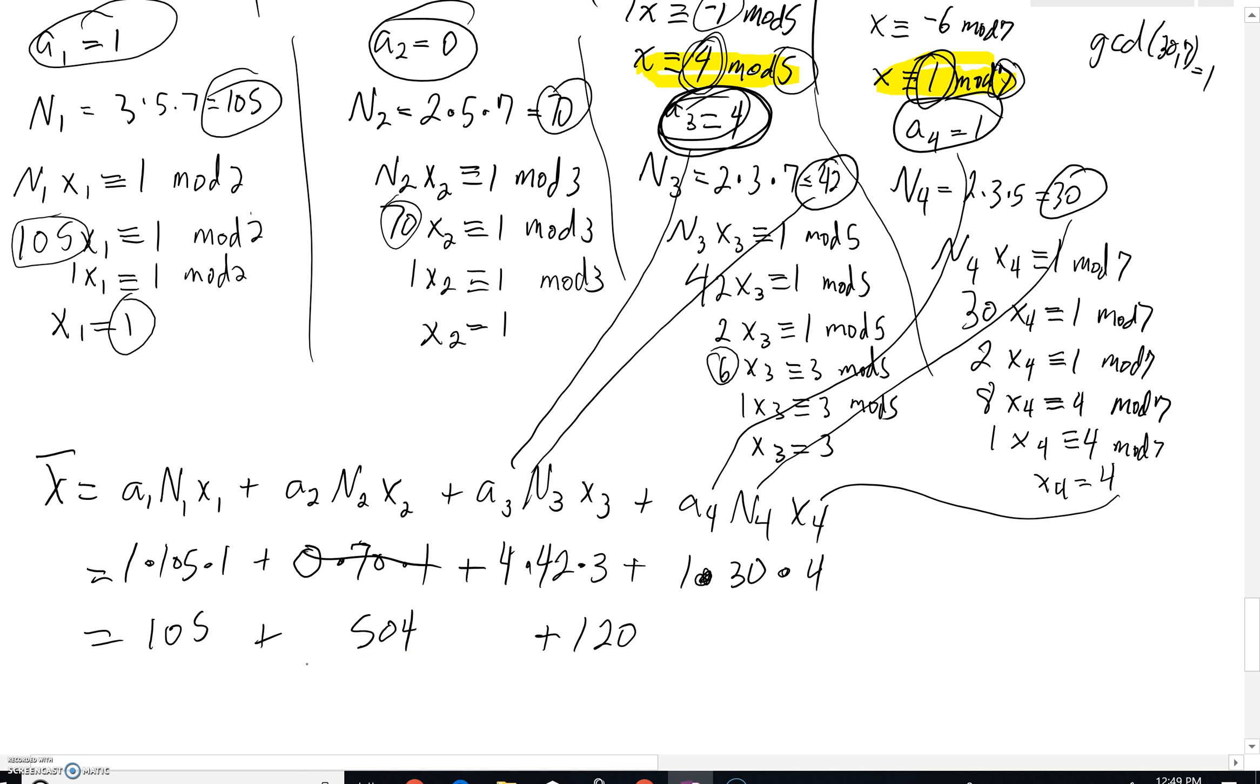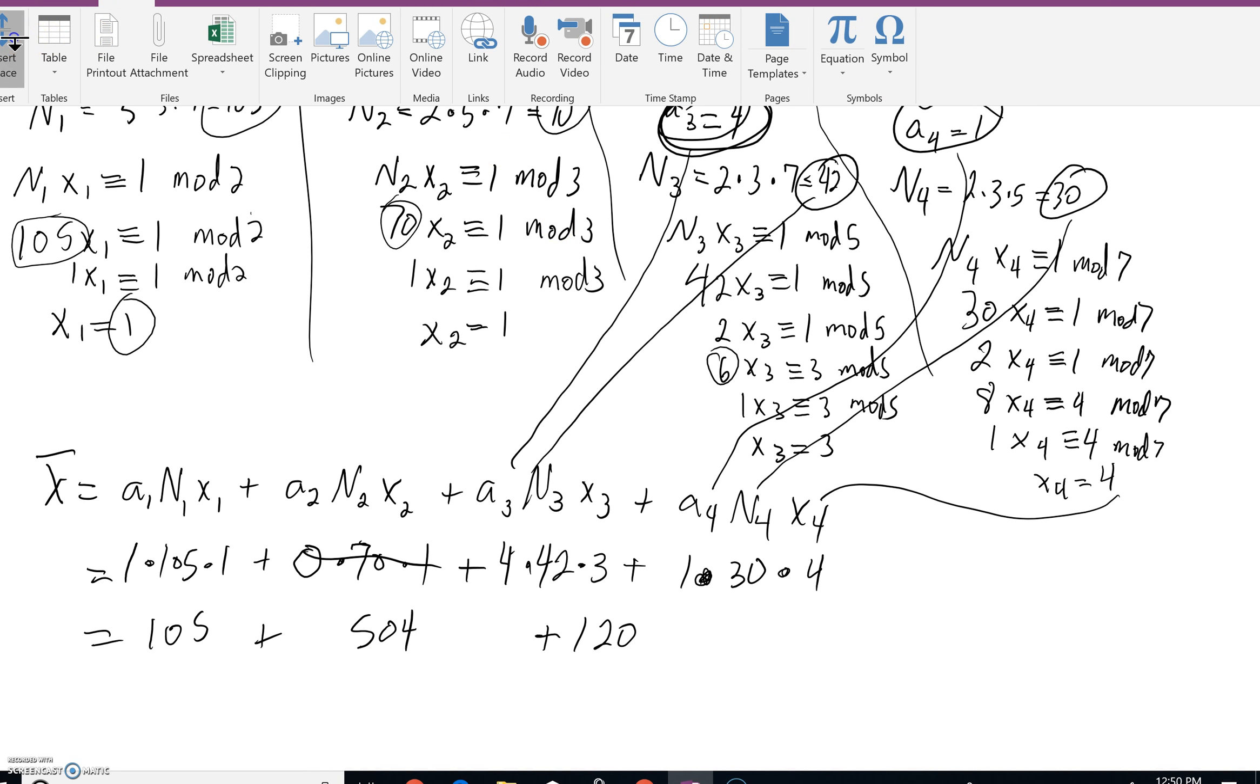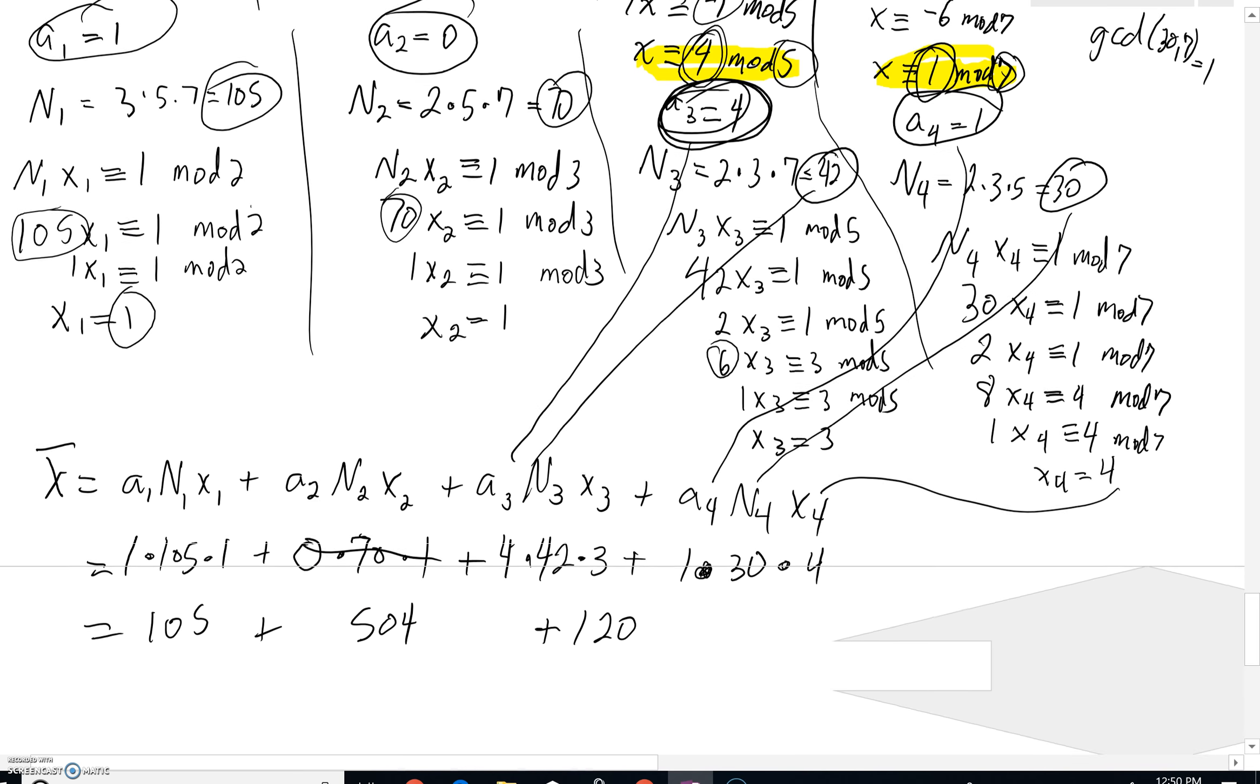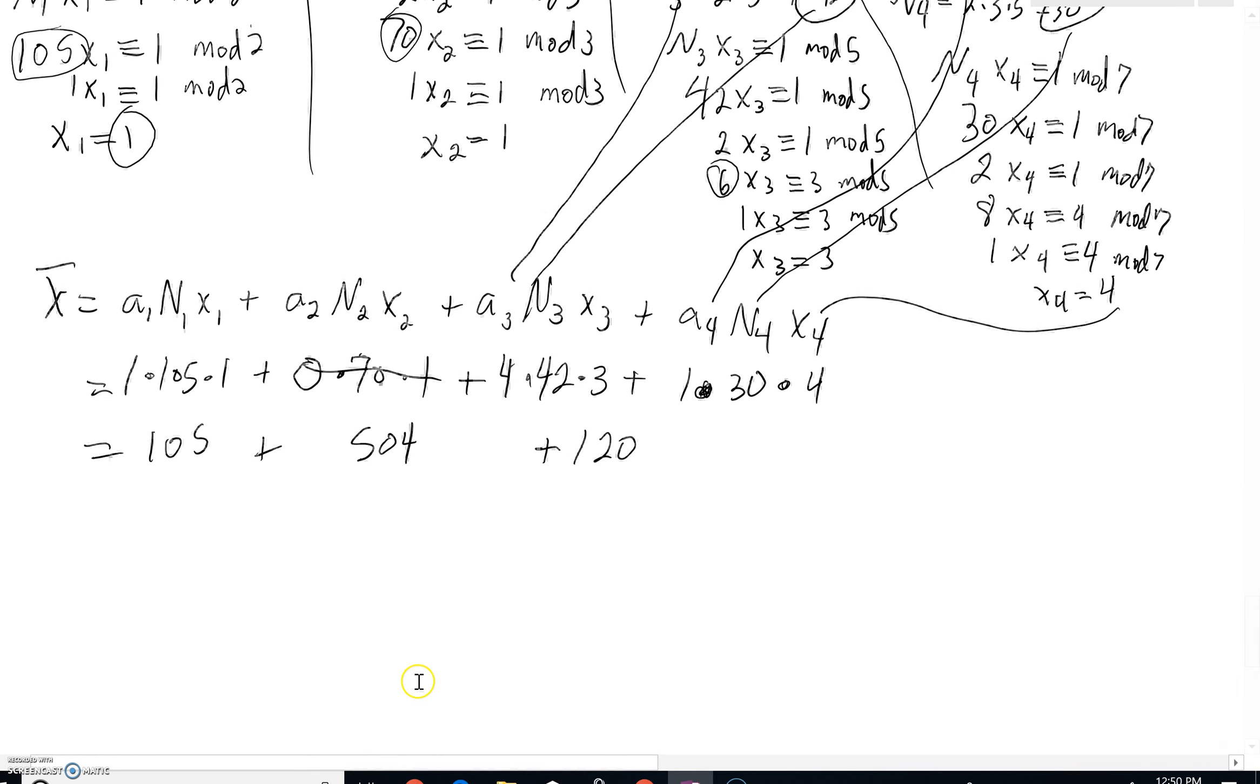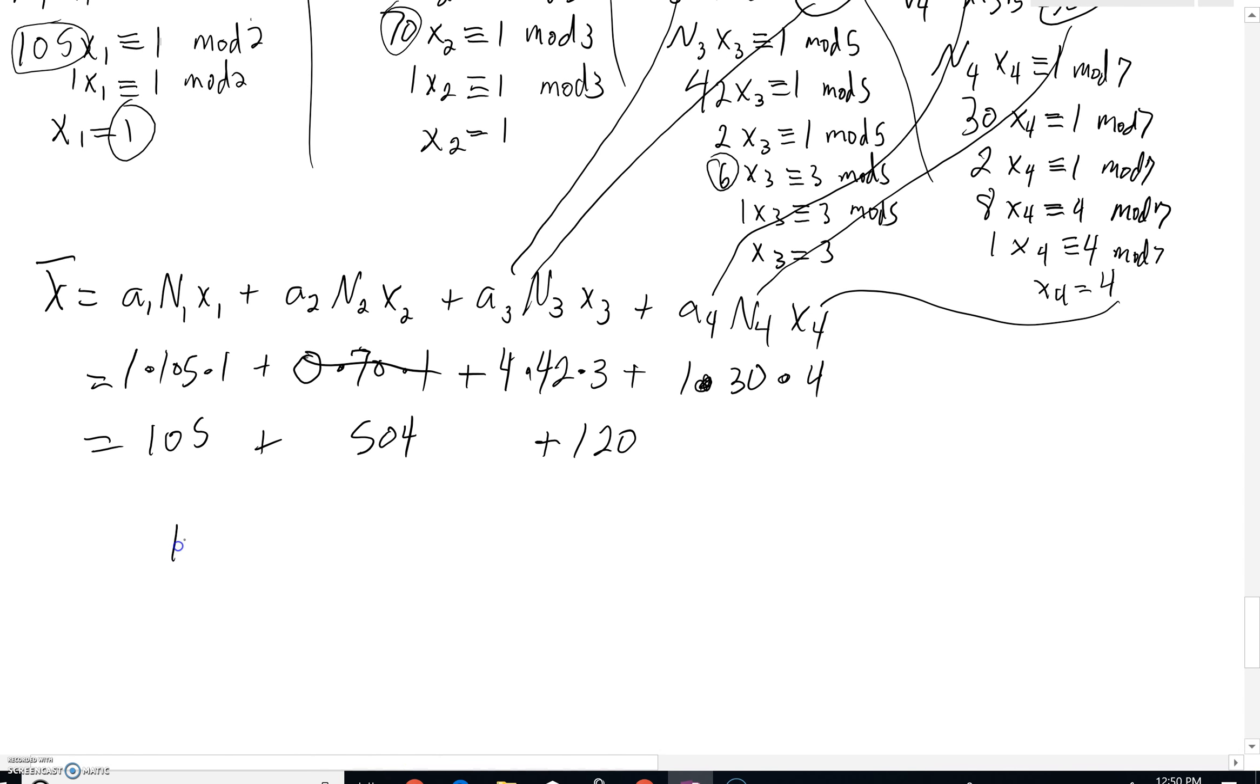Okay, 504. So, let's finish this up. We're almost done. Got a little bit of space down here. If we were to add up 105, 504, 120, I hope it's only going to take you a moment to see that you'd get 729. That's what x̄ is.